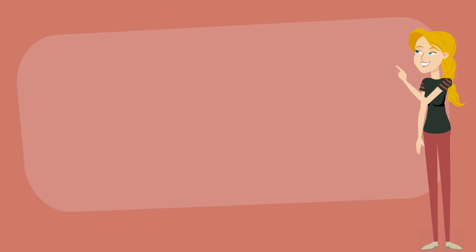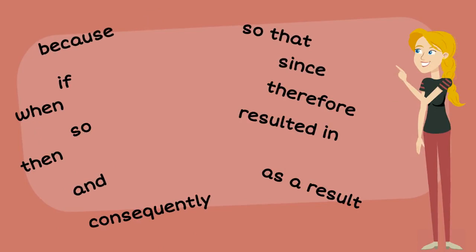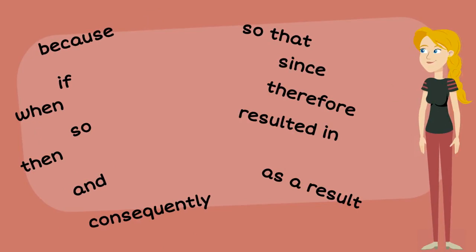To identify cause and effect in a text, you can look for words such as because, if, when, so, then, and, consequently, so that, since, therefore, resulted in, as a result.